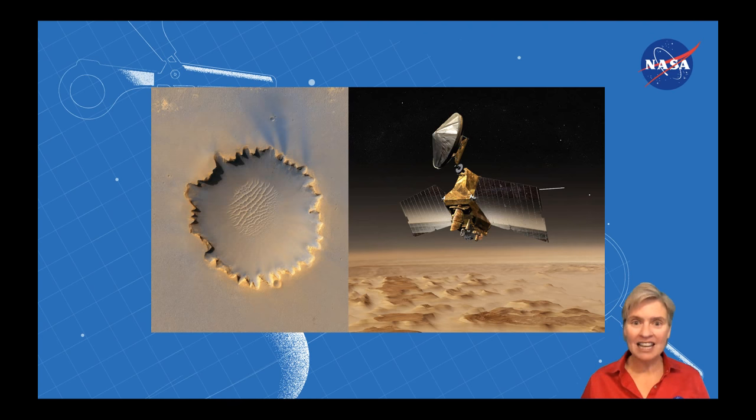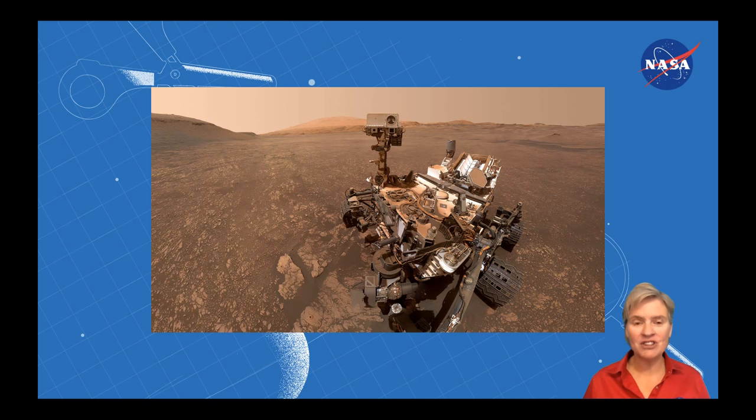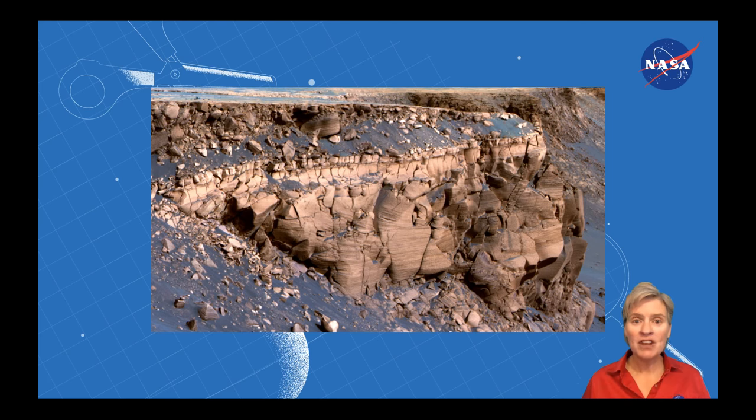We have satellites in orbit around Mars that take global pictures, and we have a rover on the surface that takes up-close pictures. But there are some places on Mars that a rover just can't go. They're too rocky or too steep of a cliff.